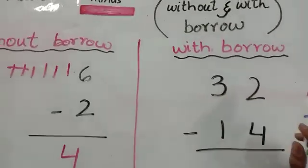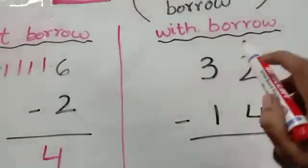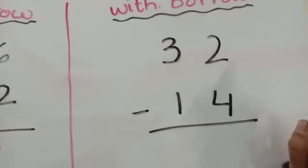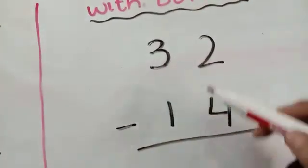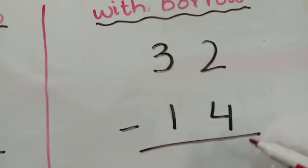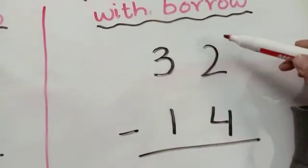Now, move to another example, which is with borrow. Okay, now, look here. Here it is written, 32 minus 14. Now, look here. How do we start from your right side?